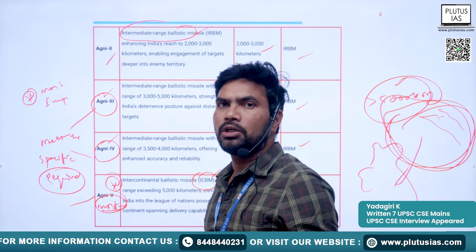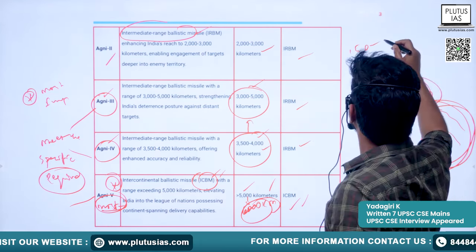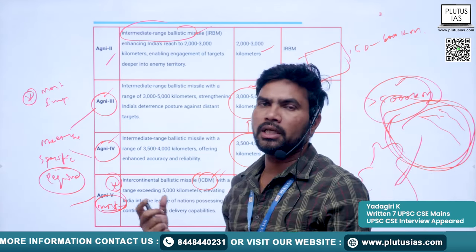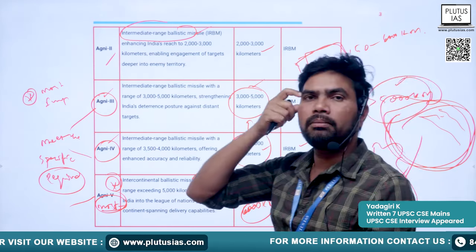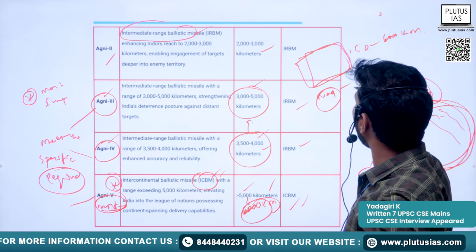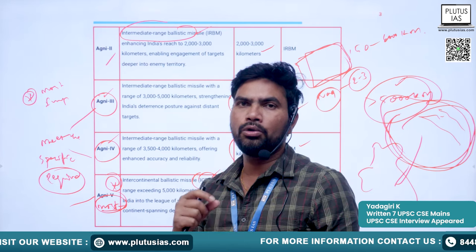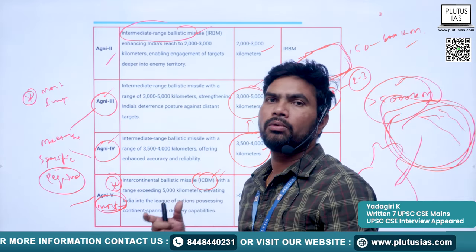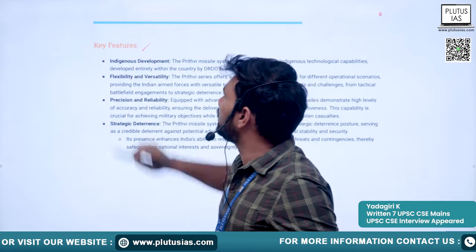Through both missile systems, the combined range covered is 150 to 6000 kilometers. Further short-range gaps are filled by cruise missiles. There are also anti-tank missiles like Nag, with a range of 2 to 3 kilometers, so India has missiles covering ranges from 1–2 kilometers up to 6000 kilometers.